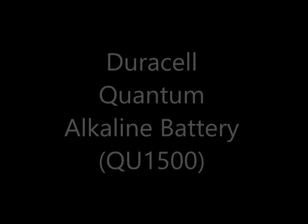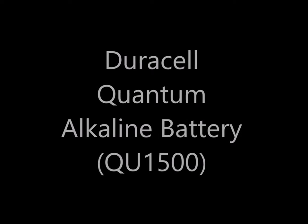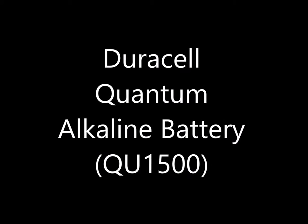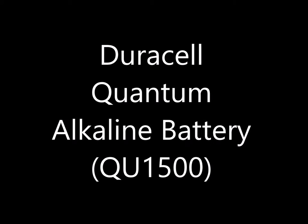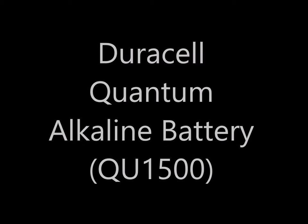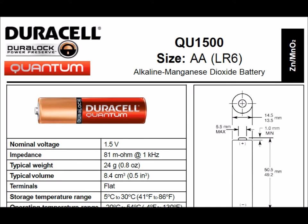Let's take a look at the specs for a typical battery — the Duracell Quantum Alkaline battery, QU1500. Looking at the spec sheet, we can see that the nominal voltage is 1.5 volts.